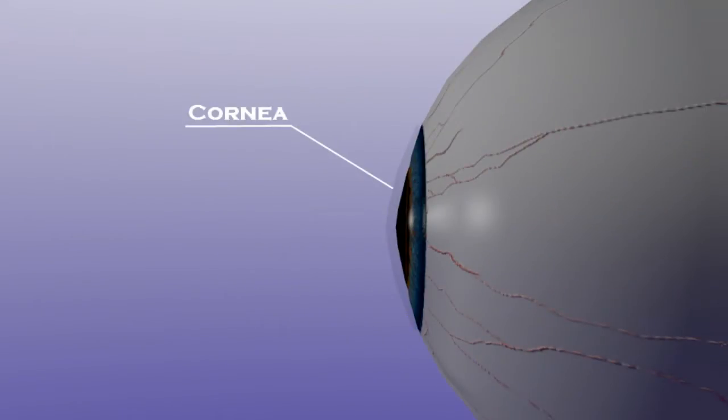The cornea is the clear surface of the outer eye. It is about a half a millimeter thick and consists of five layers. It has two main functions.